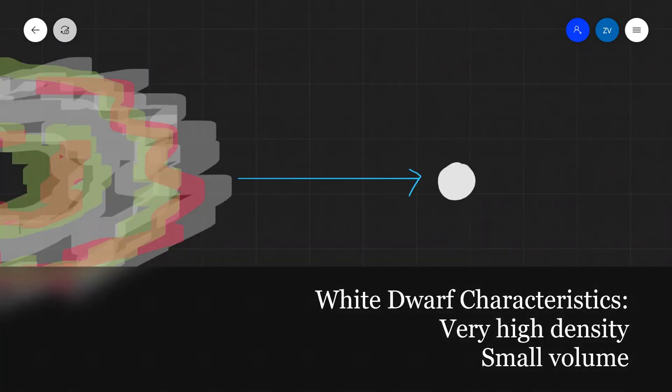A white dwarf star has several important characteristics. Number one, it is extremely dense. You would have a mass similar to that of the sun compressed into a volume similar to a planet. So a white dwarf is extremely dense and also has a small volume.